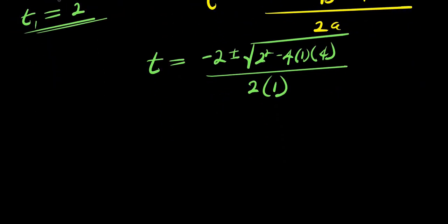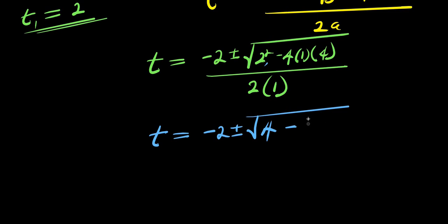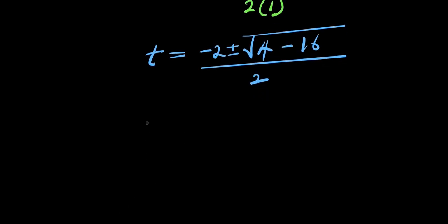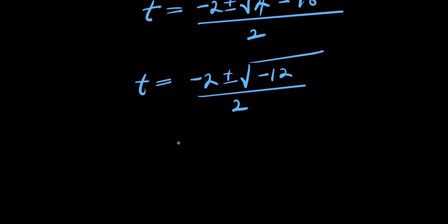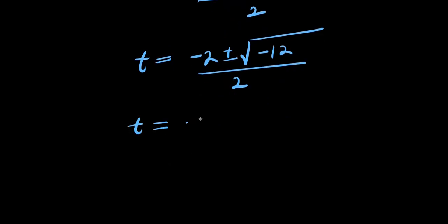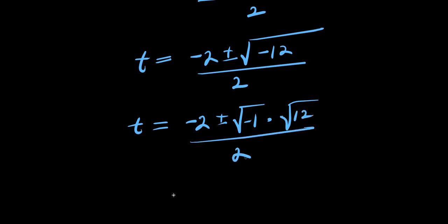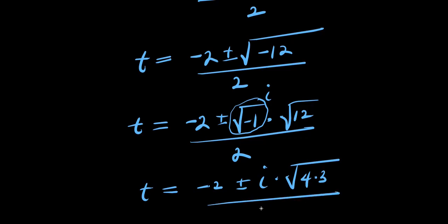So we have t equals negative 2 plus or minus square root of 4 minus 16, divided by 2. From here, we have t equals negative 2 plus or minus square root of negative 12, divided by 2. And from here, we have t equals negative 2 plus or minus square root of negative 1 times square root of 12, divided by 2. Square root of negative 1 is i, and square root of 12 is square root of 4 times 3, divided by 2.